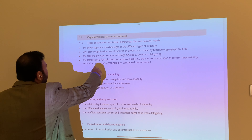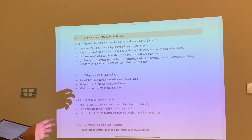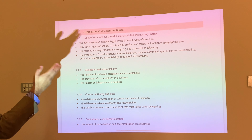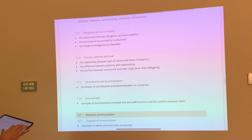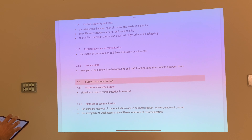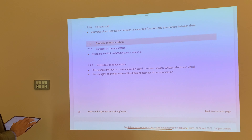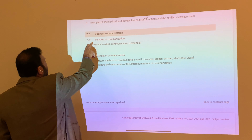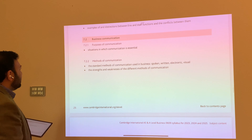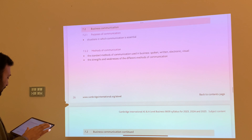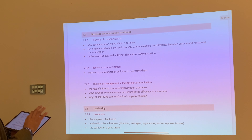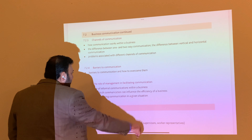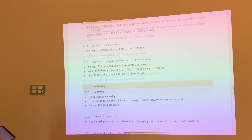We have been already teaching organizational structure and all that: delegation, accountability, control, authority, trust, centralization, decentralization, line and staff management. These were originally part of section number 2, not section number 7. Business communication — we have been already teaching that — channels of communication, barriers to communication, and the role of management in facilitating communication. We should be focusing on that now.